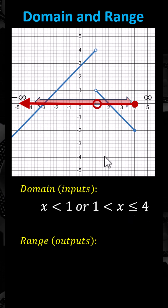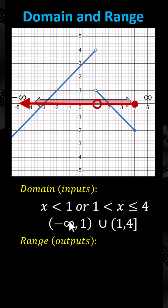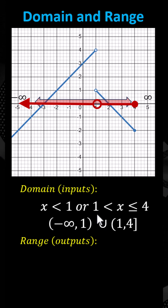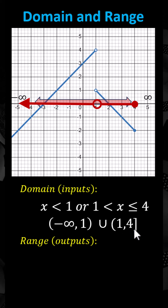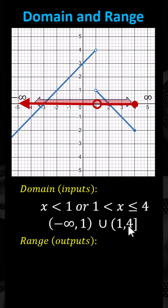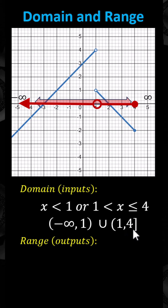Using interval notation, x less than 1 is the open interval from negative infinity to 1. Then we have union for 'or', followed by the interval from 1 to 4, open on 1 and closed on 4. The parenthesis to the left of 1 indicates 1 is not in the interval. The bracket to the right of 4 indicates 4 is in the interval.